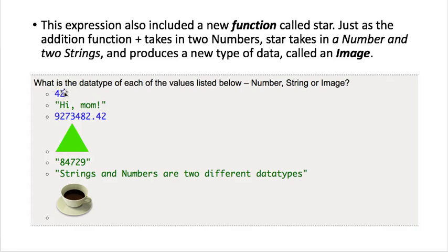So hopefully you typed out what you think these are. And I'll tell you now. So 42 is a number. Hi mom is a string. This here is a number. This triangle is an image. Those are the choices. It's not a number or a string, so it must be an image.